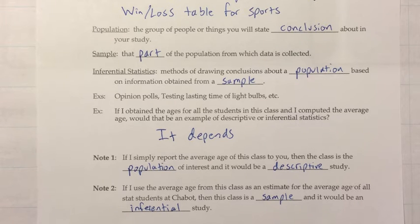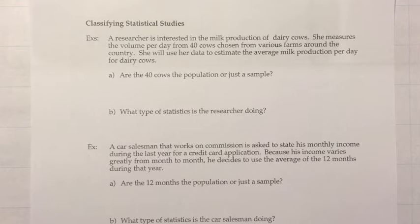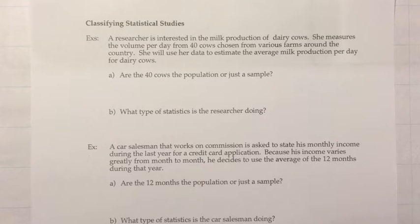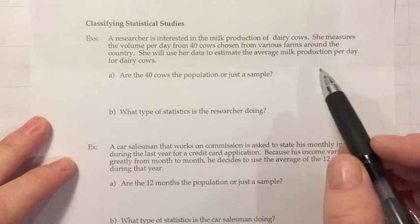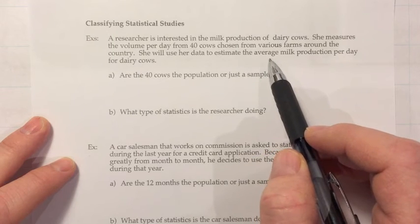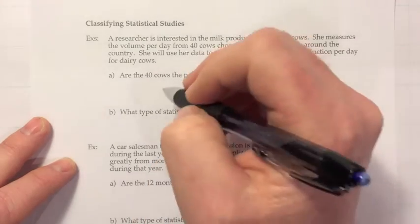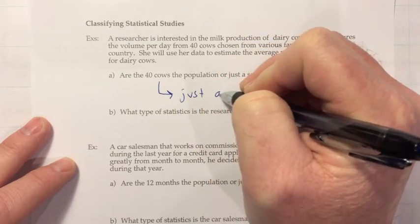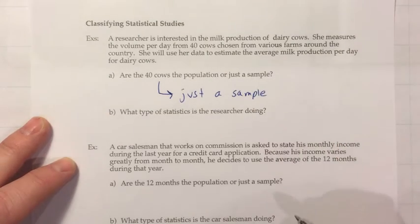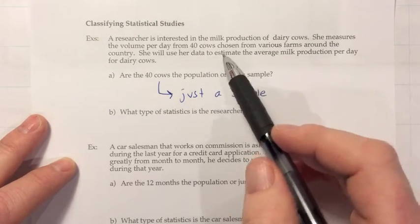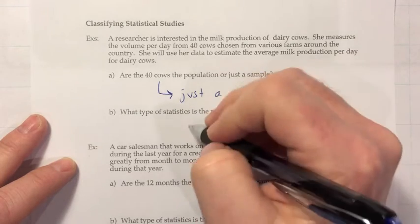We'll see some more examples on the next page for added clarity. A researcher is interested in the milk production of dairy cows. She measures the volume per day from 40 cows chosen from various farms around the country, and will use her data to estimate the average milk production per day for dairy cows. Are the 40 cows the population or just a sample? The key is: she's computing an average for all dairy cows in general, and she only has 40 cows. So the 40 cows are just a sample — and expanding that out to dairy cows in general, she's doing inferential statistics.